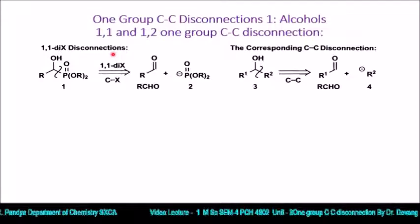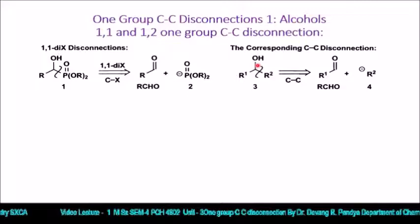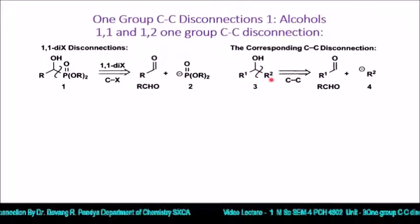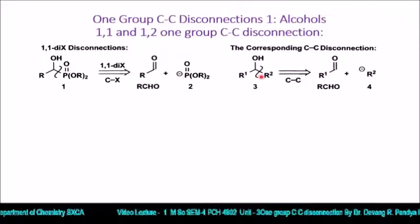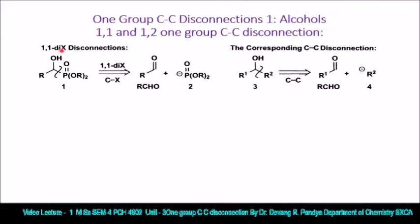Now we compare CC disconnection with this. We have one heteroatom — the hydroxyl group — attached to carbon number 1, and the same carbon has two alkyl groups. We can put a wiggly line on either carbon. Here we put the wiggly line to depart the R2 group, much like we disconnected the C-P bond. Here it is a C-C bond — this is the corresponding CC disconnection.